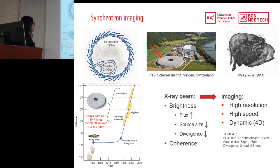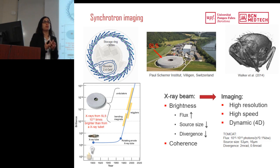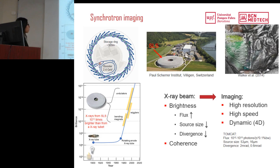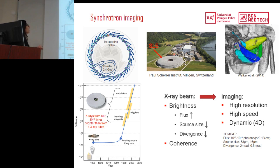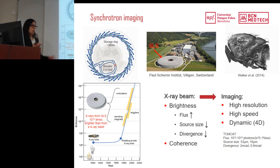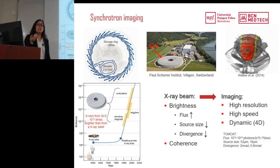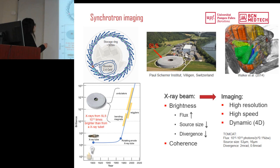Basically, a synchrotron is an extremely powerful source of X-rays generated by electrons circulating in a storage ring at almost the speed of light. Electrons are generated in the LINAC, pre-accelerated in the booster to up to 2.4 giga-electronvolts, and then injected and accelerated in the storage ring where they circulate continuously. When a moving electron is forced to change its direction by application of a magnetic field, it loses energy in the form of X-rays. These X-rays are then directed to different beam lines surrounding the synchrotron, each dedicated to a different application — imaging, materials science, and more.